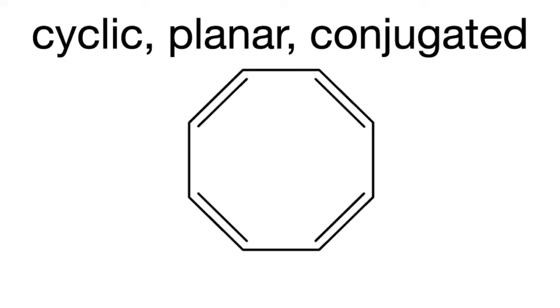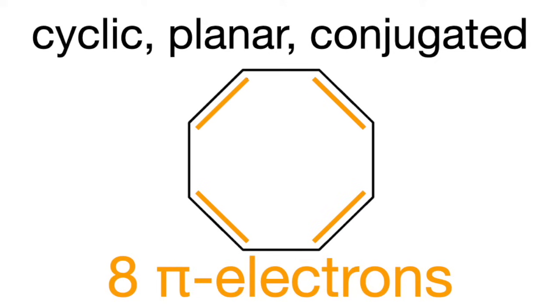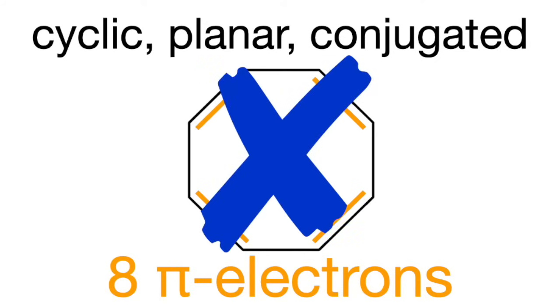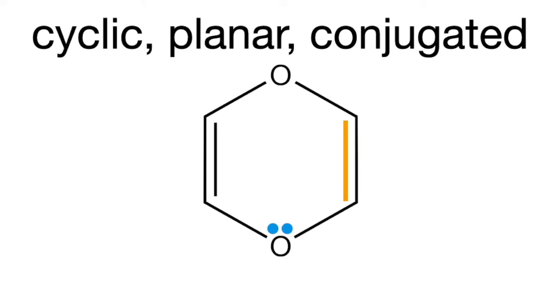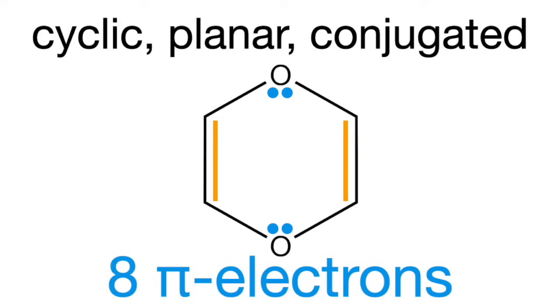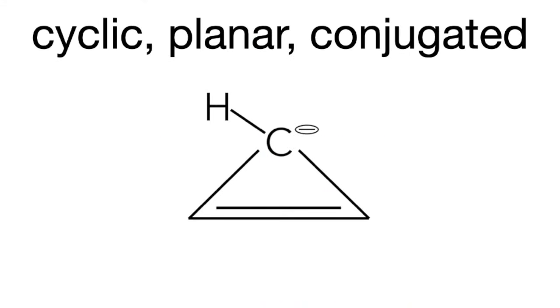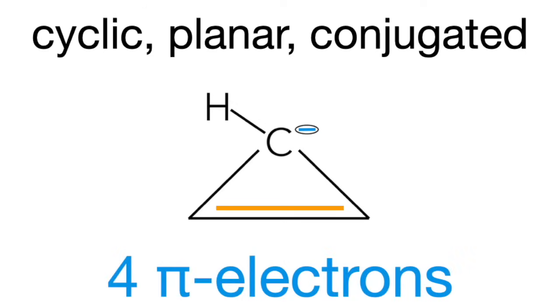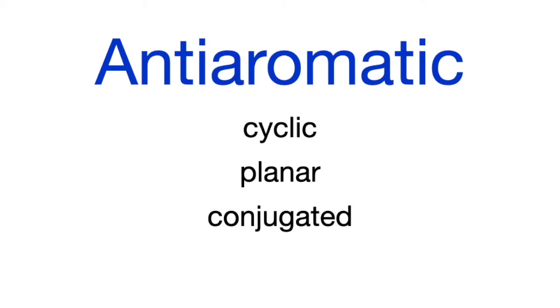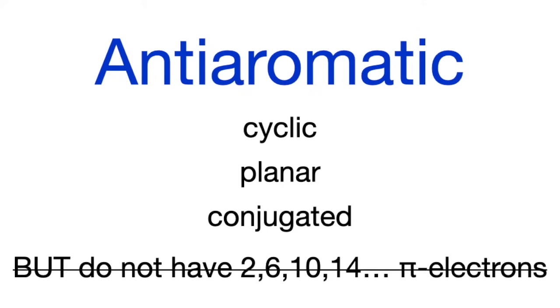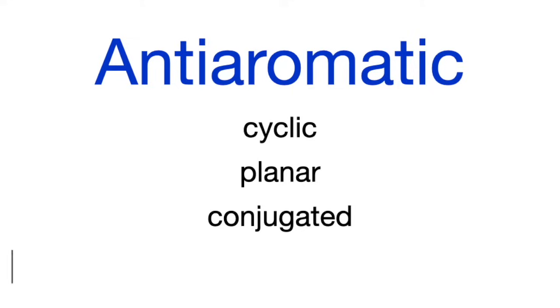Here's an example of a cyclic planar conjugated molecule that has 8 pi electrons, which is not one of the SPDF numbers, meaning it's not aromatic — it's anti-aromatic. Yet another example: a cyclic planar conjugated molecule with 8 pi electrons — again not one of the SPDF numbers — so it's anti-aromatic. Here's another cyclic planar conjugated molecule with a negative charge on the carbon, with only 4 pi electrons — not one of the SPDF numbers — so it's anti-aromatic. Anti-aromatic compounds are cyclic, planar, and conjugated, but they don't have 2, 6, 10, 14, and so on pi electrons, meaning they don't follow Hückel's rule.